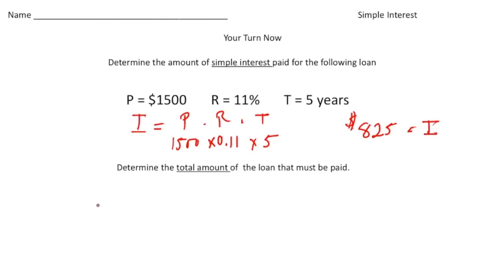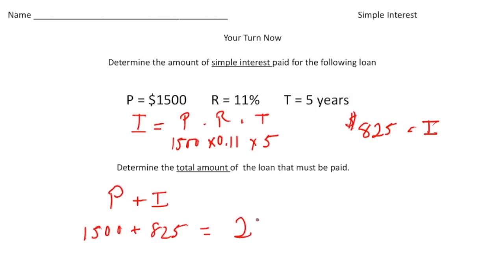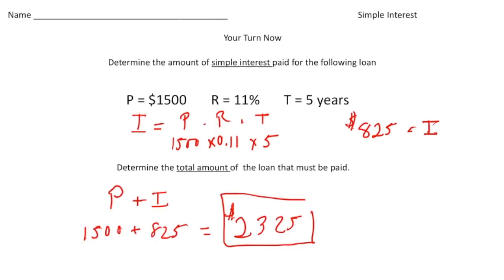To get the total amount, remember: total amount equals principal plus interest. So $1,500 plus $825 equals a grand total of $2,325 — that's the amount of money you'd have to pay back in order to borrow $1,500. How did you do?